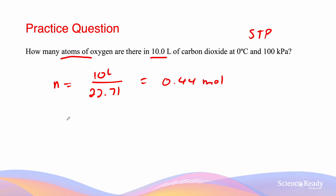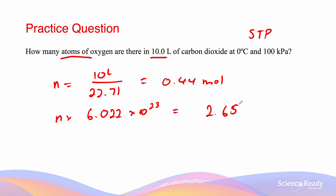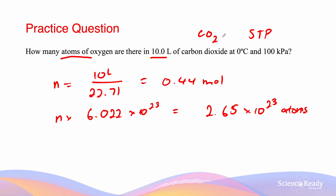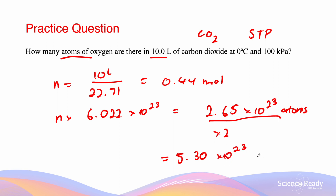We multiply n by Avogadro's number, which is 6.022 × 10²³, giving a value of 2.65 × 10²³. However, there is a trick: carbon dioxide has the formula CO₂, meaning for every one molecule of carbon dioxide there are two atoms of oxygen. So we multiply that value by 2 to get a final answer of 5.30 × 10²³ atoms of oxygen.